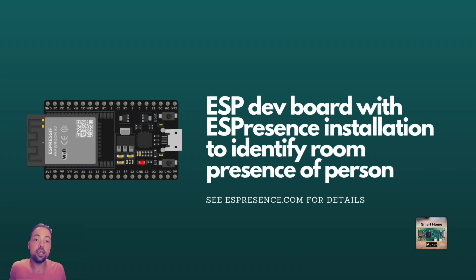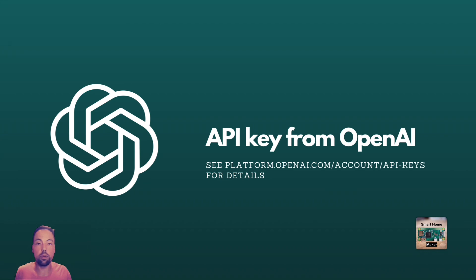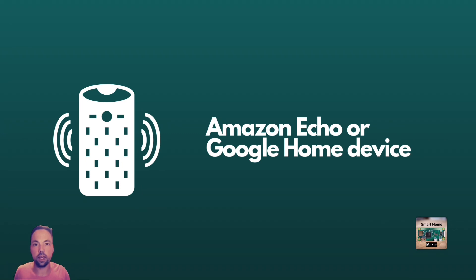You need an ESP development board running the ESPresence software, which you can find at ESPresence.com. This software helps you identify persons in a room based on the Bluetooth proximity of their smartphone or smartwatch. Of course, you also need a Home Assistant installation, an API key from OpenAI — there are already numerous tutorials out there explaining how to get one — and a smart speaker device like an Amazon Echo or a Google Home device, which can then play back your good morning message.